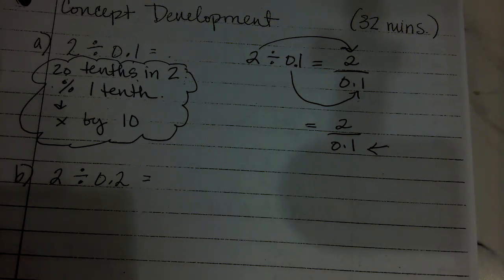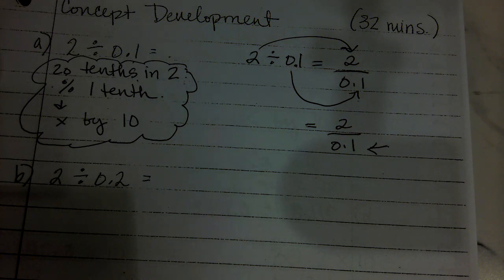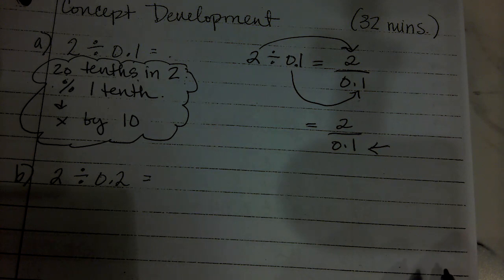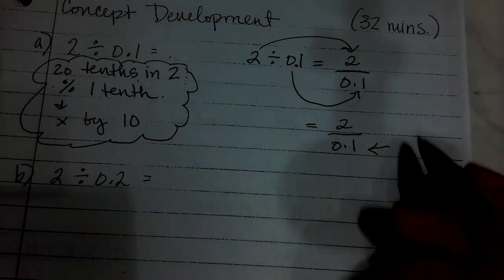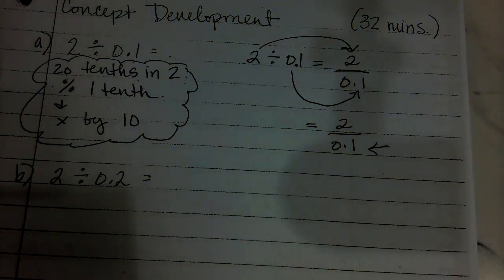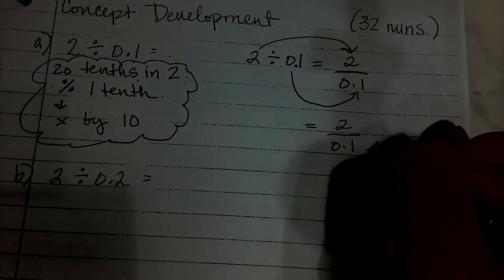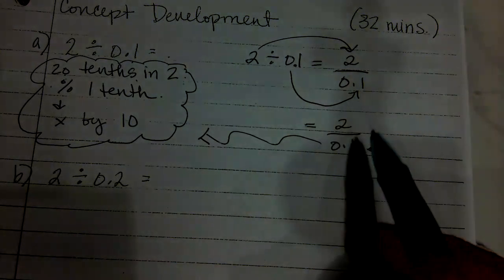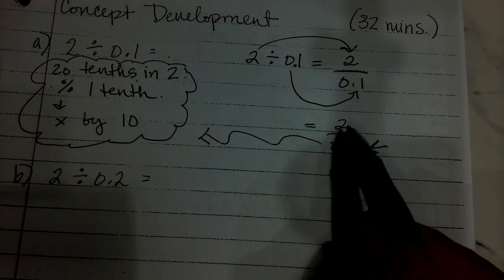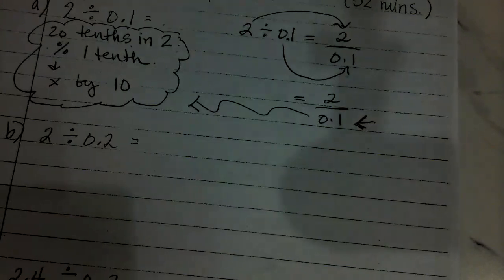What have we learned that allows us to rename fractions without changing their value? We can multiply by a fraction equal to 1 — like 1 over 1, 2 over 2, 3 over 3. But what fraction equal to 1 will rename the denominator as a whole number? How do I rename this 1 tenth as a whole number? What can I multiply by to make it a whole number?